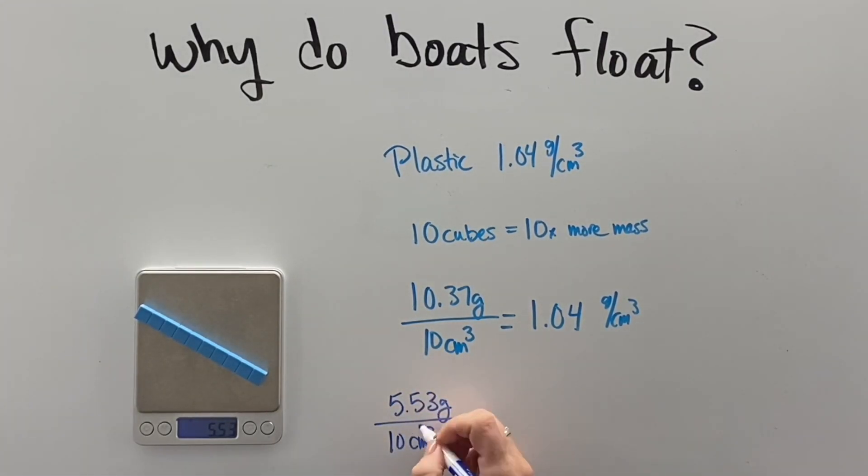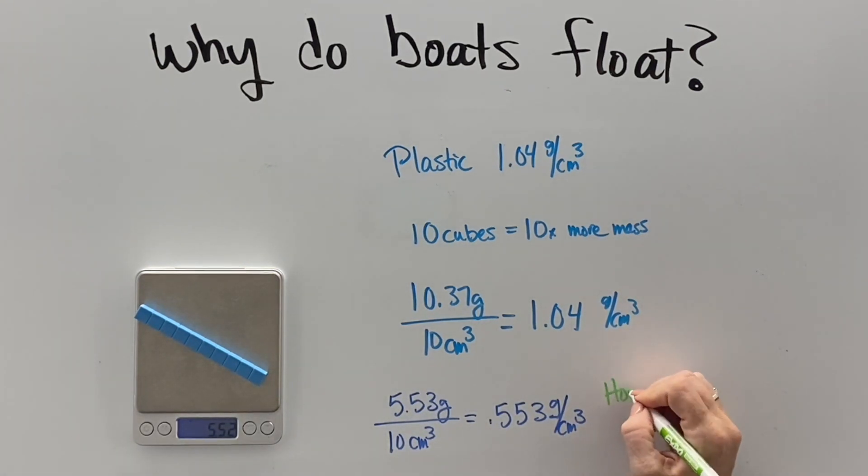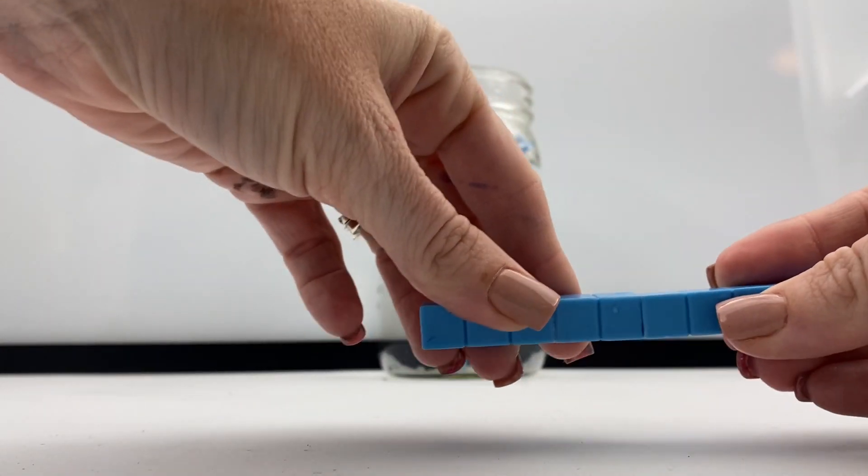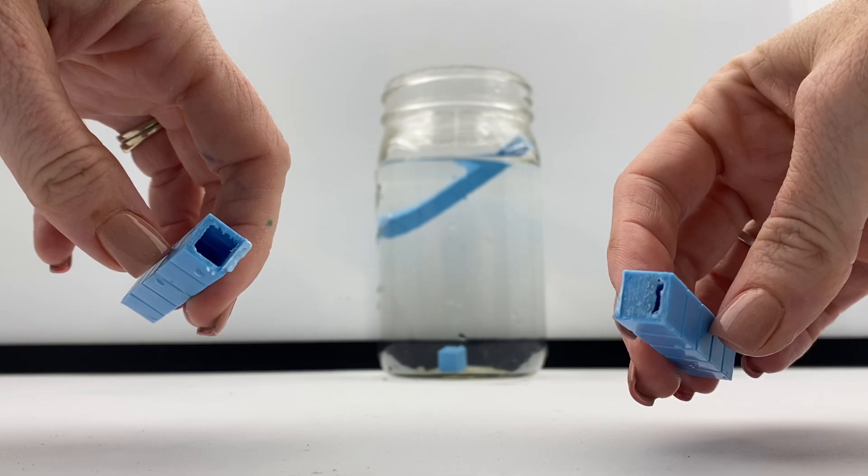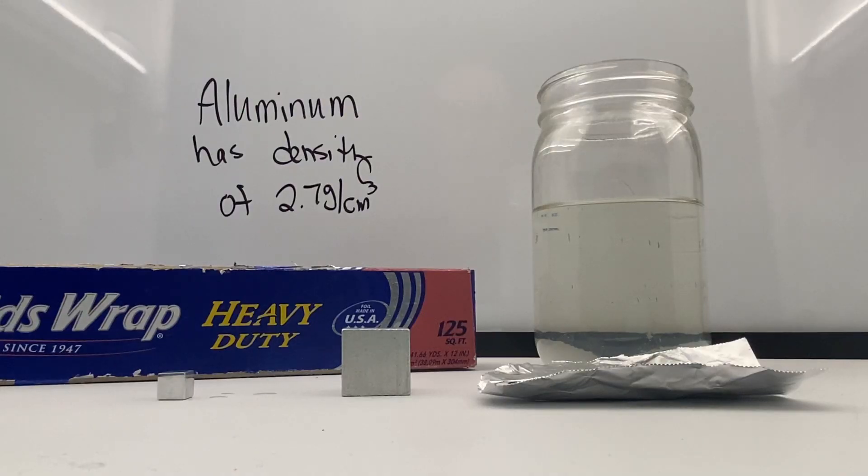When we find the mass of that tens cube, it only has a mass of 5.53 grams, which means its density is 0.55 grams per cubic centimeter. But how did that happen? Oh my goodness, there's air trapped inside. They hollowed it out.